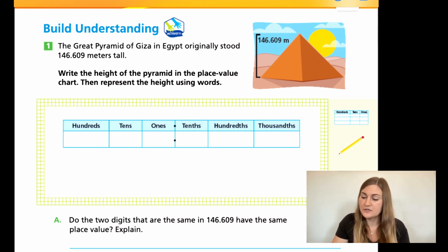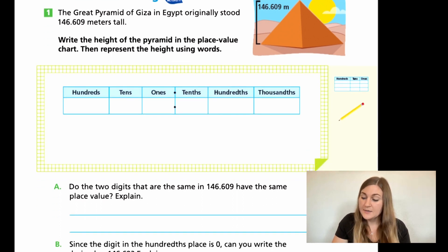Then in A, it says, do the two digits that are the same in 146 and 609 thousandths have the same place value? So which numbers are the same? Do they have the same place value? B, since the digit in the hundredths place is 0, can you write the decimal as 146 and 69 hundredths? And the way I said it should give you a hint.